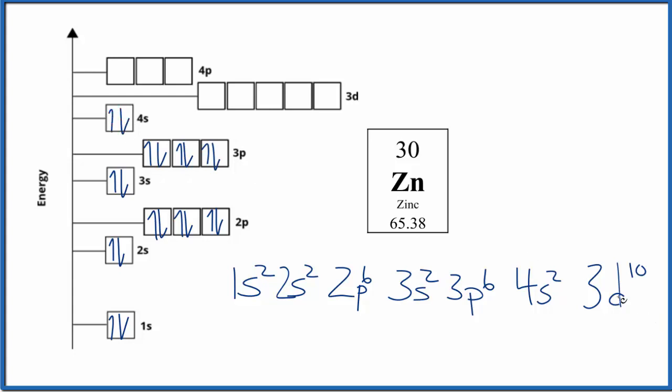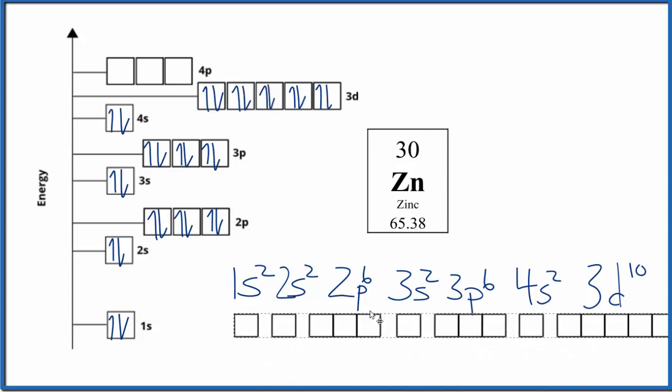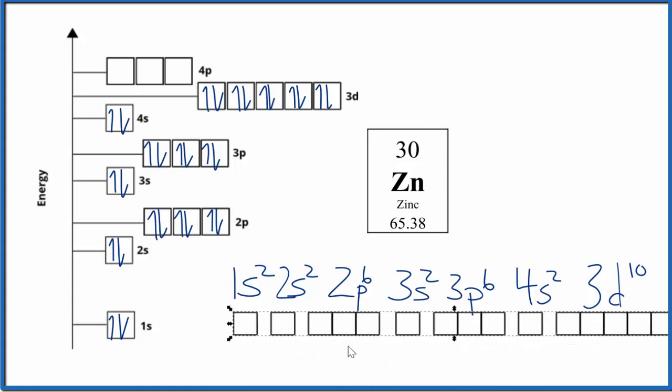Finally we have 3d10, so we'll spread them out and then pair them up. That's the atomic orbital diagram for zinc. Sometimes it's written out like this, it's really the same thing just in a horizontal fashion.